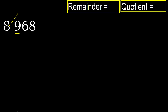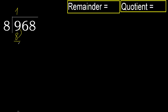8 multiplied by 2 is 16 — 16 is greater. Multiplied by 1 is 8 — is not greater. So the answer is 1. 9 minus 8 is 1.